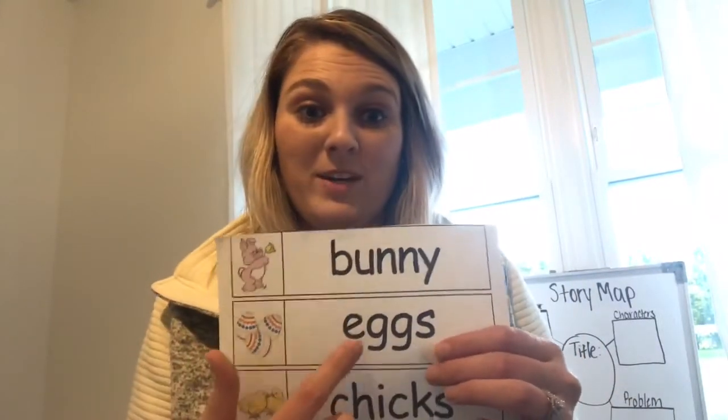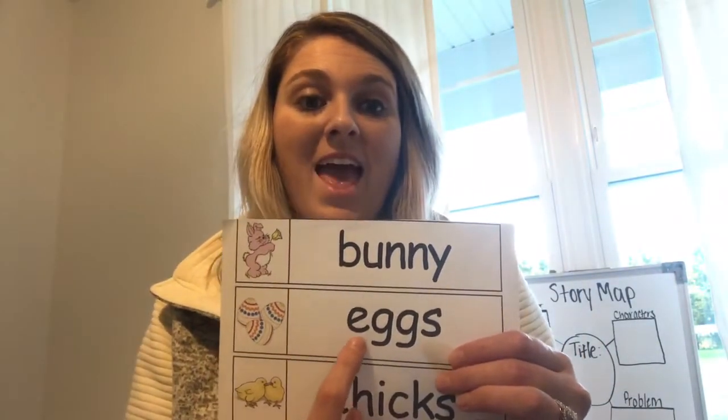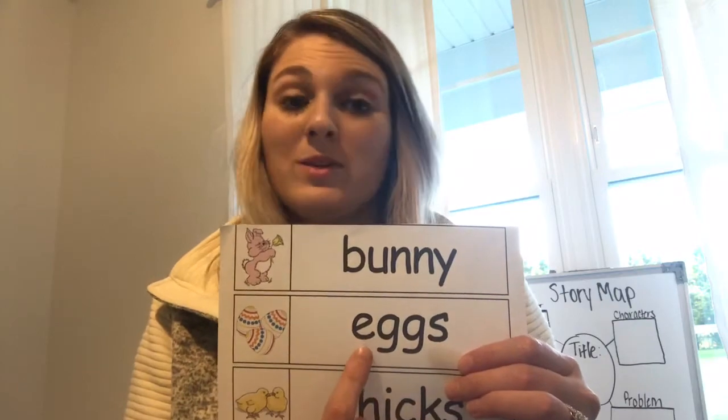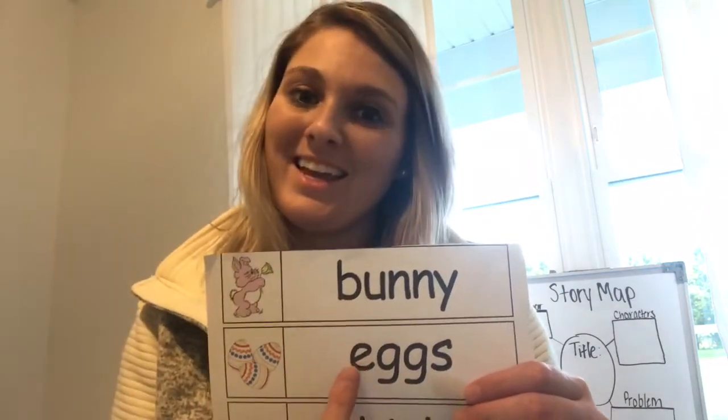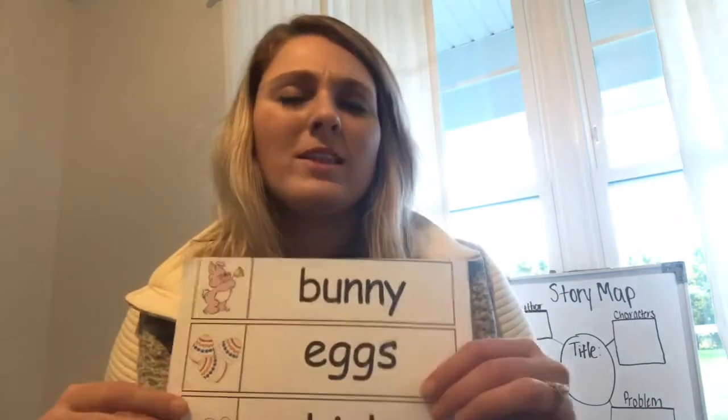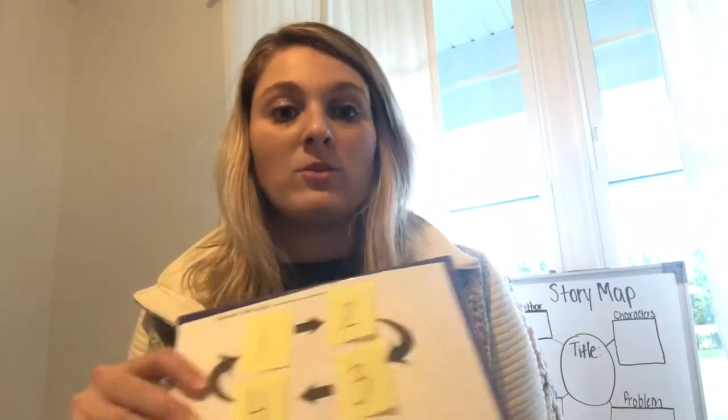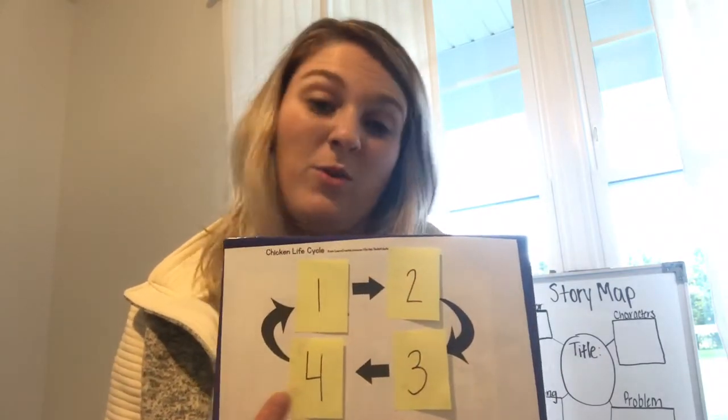We're going to be talking about this word again today, and it is eggs — it starts with the letter E. We learned yesterday that lots of different animals and insects come from eggs, and the main one we were talking about was a chick coming from an egg. But I want to know how that happens and in what order. So we're going to talk about first, second, third, and fourth, or last.